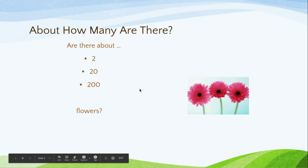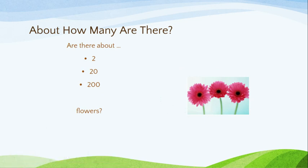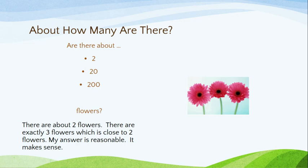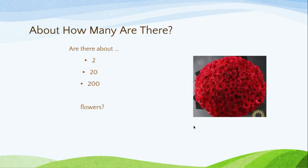So let's see — about how many are there? Remember, we're not really counting. Looking at this picture, are there about 2, 20, or 200 flowers? There are about 2 flowers. There are exactly 3 flowers if you were to count them, but remember we're not actually counting. So the answer is 2 because my answer is reasonable and it makes sense just by looking at this picture.